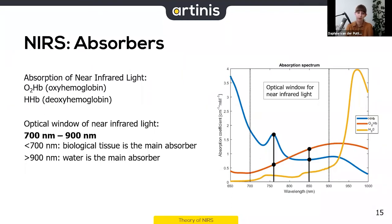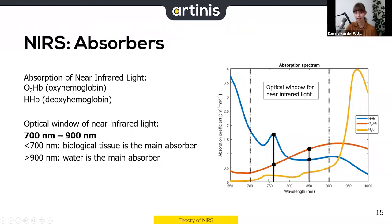If we used wavelengths lower than 700 nanometers, biological tissue would be the main absorber. If we used wavelengths higher than 900 nanometers, water becomes the main absorber. You can see this in the graph — wavelength on the x-axis, absorption coefficient on the y-axis — water in yellow rises sharply in absorption after 900 nanometers.